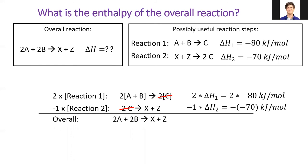Now that we've assembled our overall reaction by manipulating the reaction steps, we need to add together the enthalpies to get the overall enthalpy. We'll add 2 of enthalpy 1 to negative enthalpy 2 to get the final value of negative 90 kilojoules per mole.